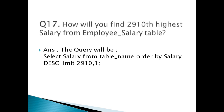Question seventeen: How will you find the 2910th highest salary from the employee salary table? The query uses ORDER BY and LIMIT operators. When we write LIMIT 2910, 1 it will skip 2909 records and return only the 2910th record. In this way, we can find any salary by position.